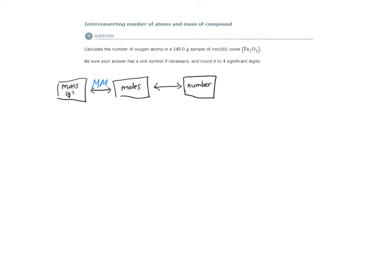How do we get from moles to number of things? We need Avogadro's number. So once we get from moles to the number of, in this case, this would be formula units. This being an ionic compound.